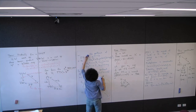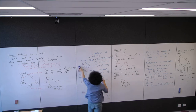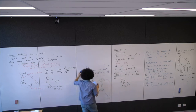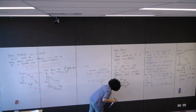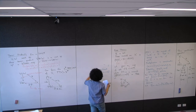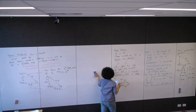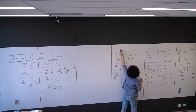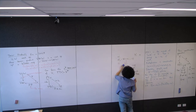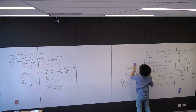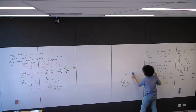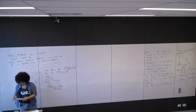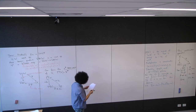Now we'll talk about two similar constructions to the tensor product: symmetric and exterior products. I'm talking about these because they're important useful pieces of algebra. You will probably see them again, particularly in differential geometry with differential forms.